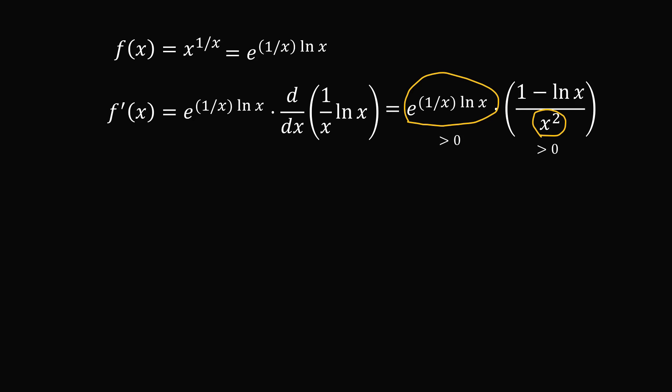So these two quantities will always be positive. So the sign of the derivative will only depend on the sign of 1 - ln x. So f'(x) ≥ 0 if and only if 1 - ln x ≥ 0.